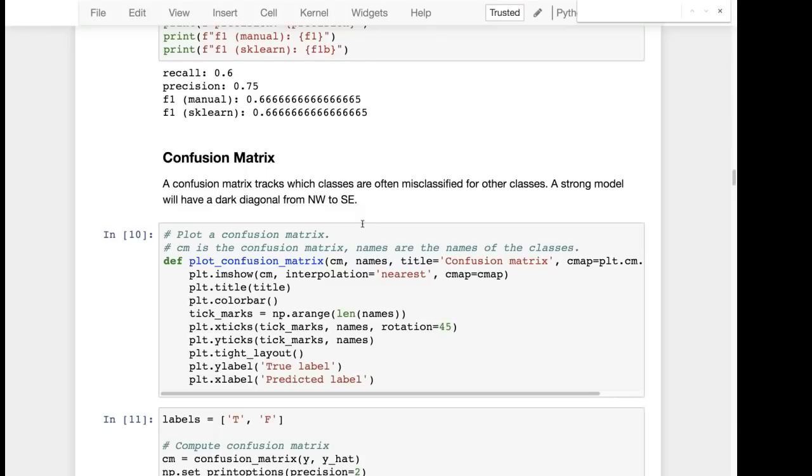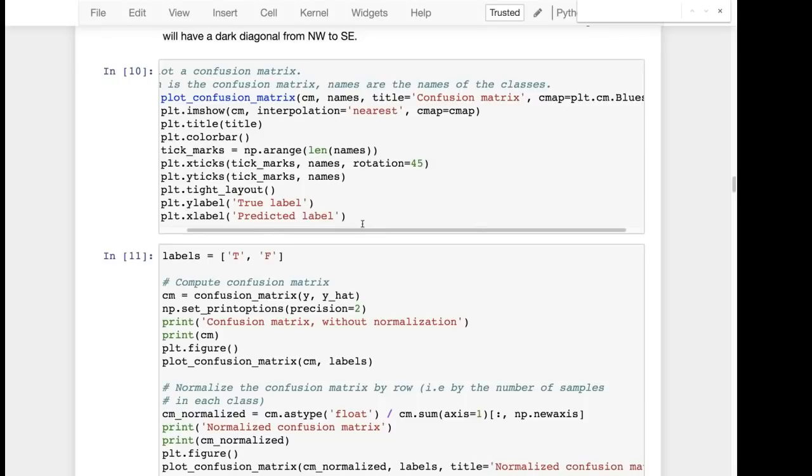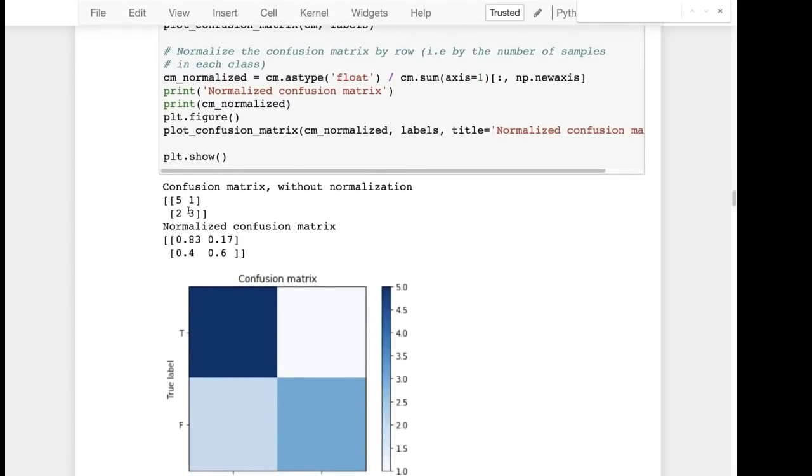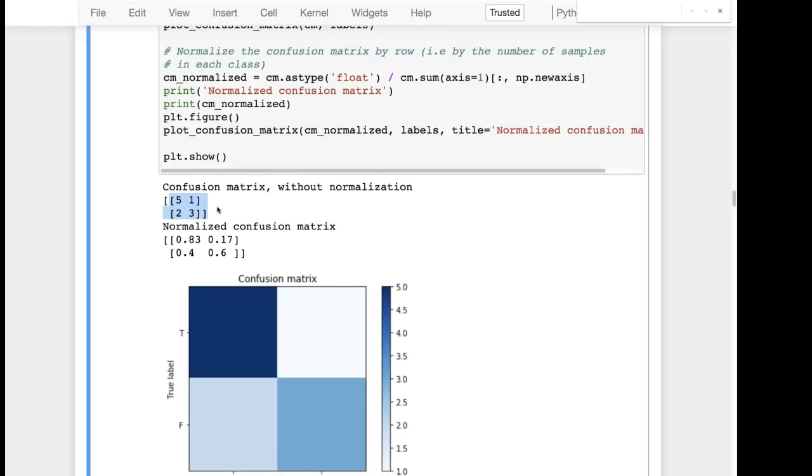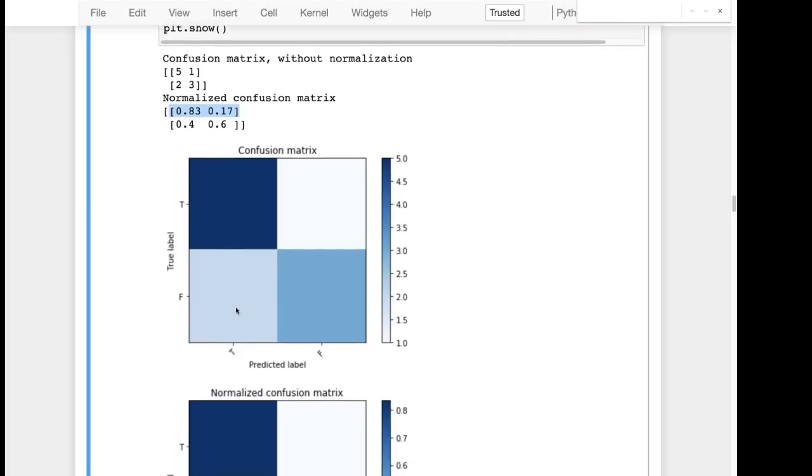Confusion matrices are useful for knowing which classes are commonly misclassified as others. They come from actual numeric matrices like you see here and this one is basically you want to see a strong diagonal. So this is showing you that the true label was often false and it was predicted true. So that shows you really where the model is having more issues with it.